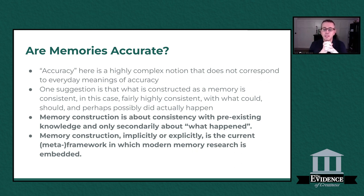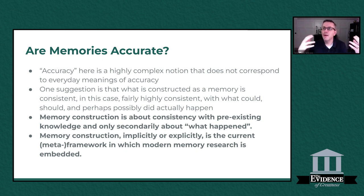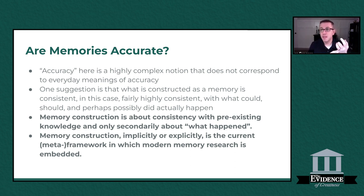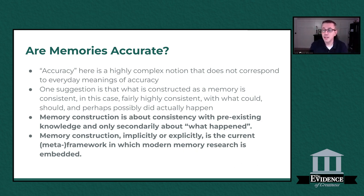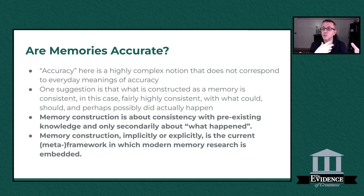Memory construction is primarily about consistency with pre-existing knowledge, and only secondarily is it about what actually happened. What we're accessing in therapy is pre-existing knowledge. In order to tell us what their desired outcome is, clients must have had some experience with it previously — not necessarily direct episodic experience, but inferred experience: maybe they've seen it on television, or known someone who had the quality they're hoping to have. We make inferences based on pre-existing knowledge, and that helps us construct a memory.